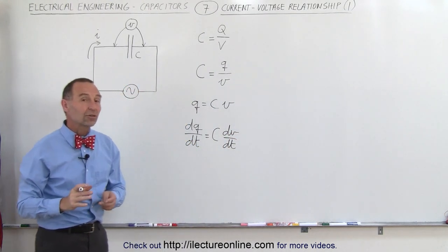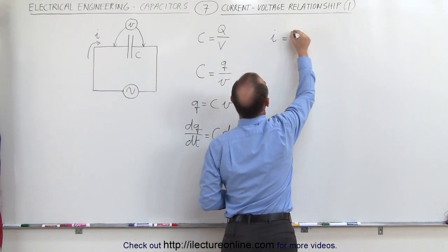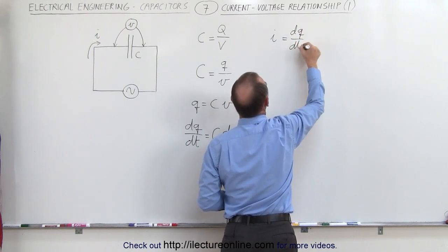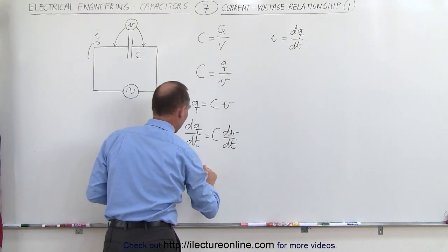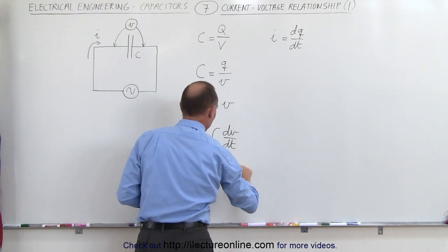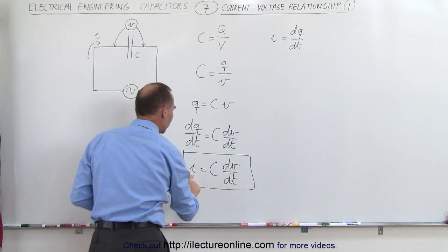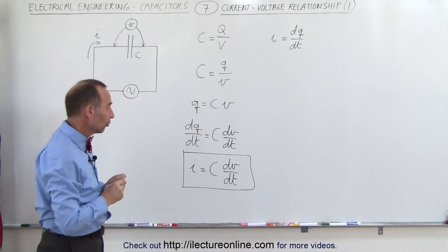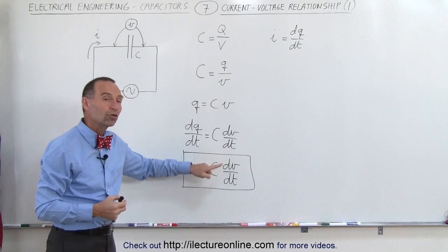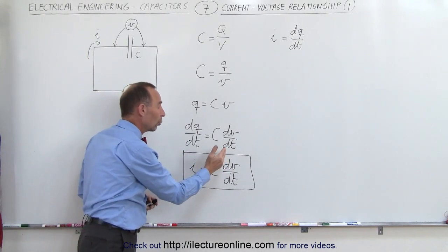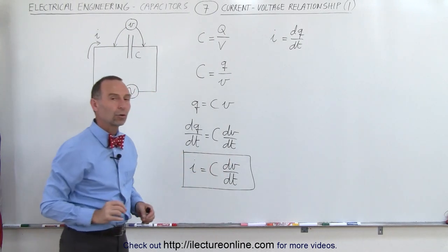Now dQ/dt is actually the definition of the current. We know that by definition the instantaneous current is always equal to the change in charge per unit time. We can then replace dQ/dt with the current, and we say the current as a function of time is equal to the capacitance times dV/dt. That's the equation that relates the current in the circuit to the voltage — the current equals the capacitance times the change in voltage per unit time. If the voltage is changing quickly, the current is high; if it's changing slowly, the current is low.